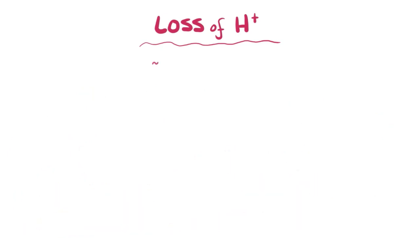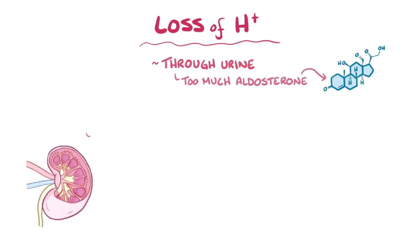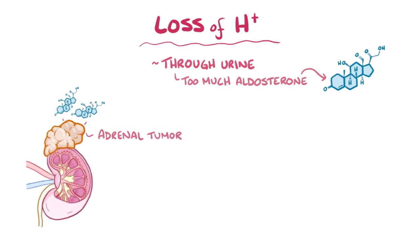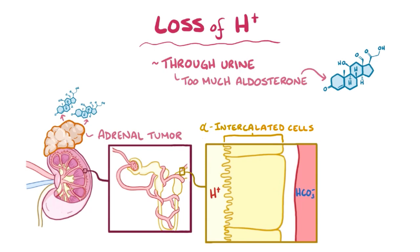Another way that hydrogen ions can be lost is through the urine, in the context of having too much of the hormone aldosterone. This can happen when there's an adrenal tumor that secretes excess aldosterone. The aldosterone makes the alpha-intercalated cells of the distal convoluted tubule and collecting duct dump out hydrogen ions and reabsorb more bicarbonate. The result is that the urine becomes more acidic, and the blood becomes more basic.